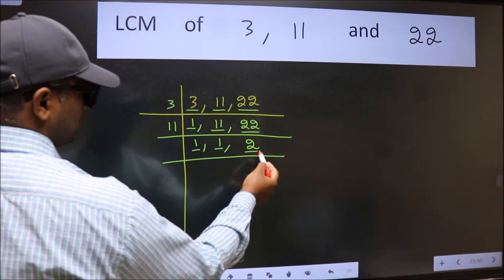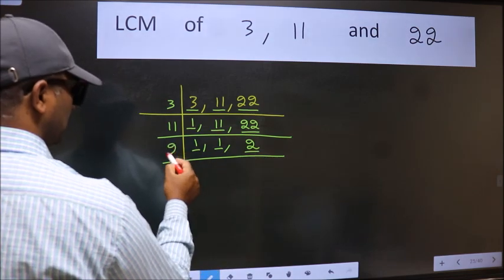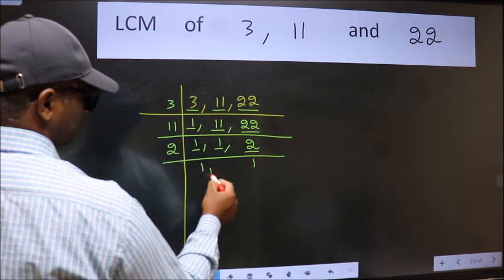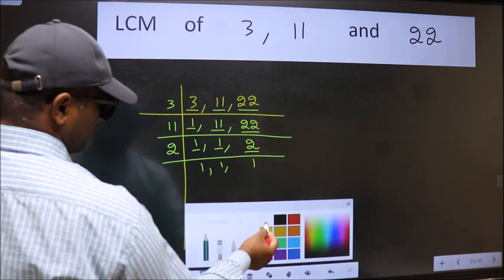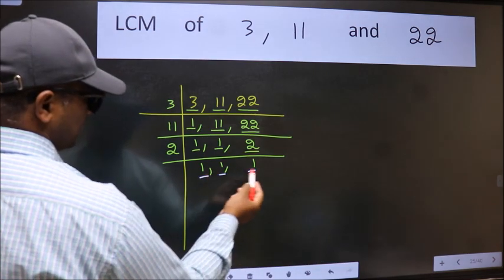So focus on the next number 2. 2 is a prime number so 2 wants 2. So we got 1 in all the 3 places.